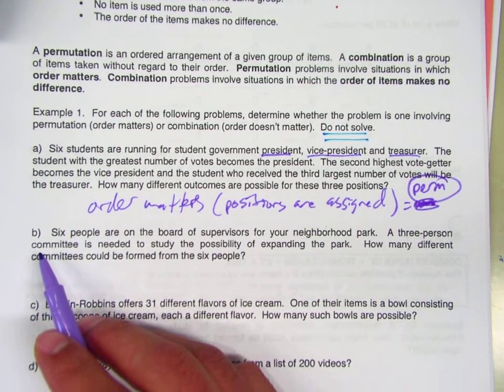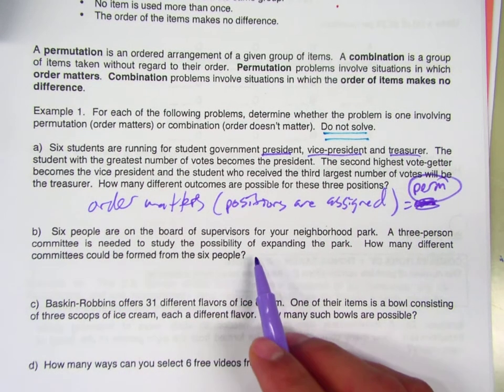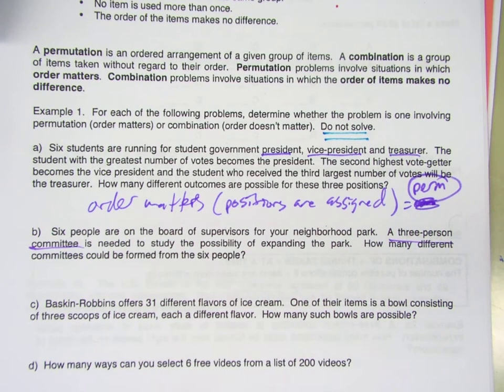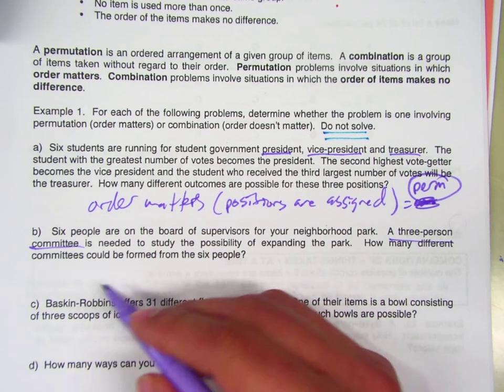Part B: six people are on a board, a three-person committee is needed. How many committees can we make? We'll answer that later, but does it matter how the three people are chosen here?